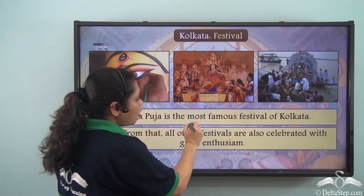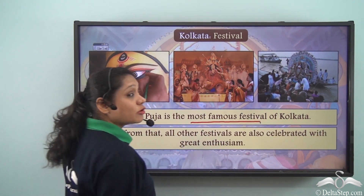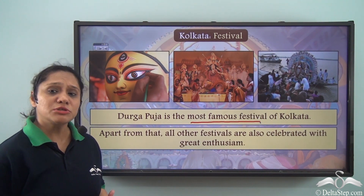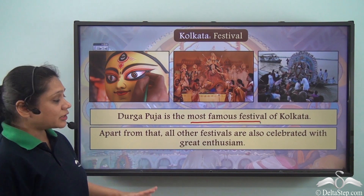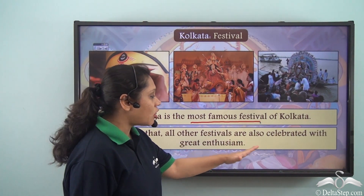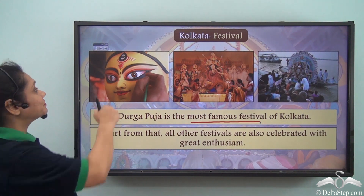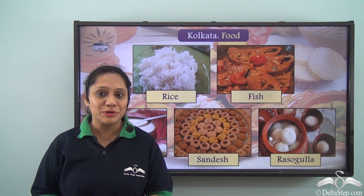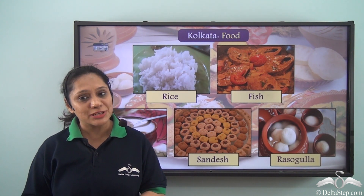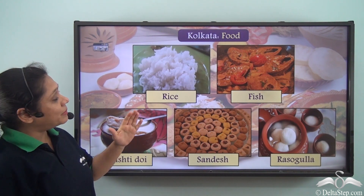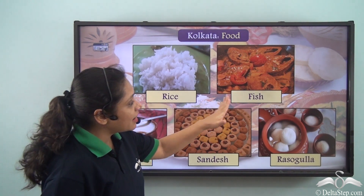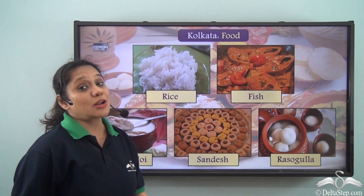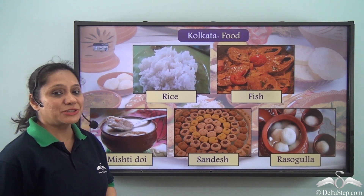Durga Puja is the most famous festival of Kolkata; the entire city is beautifully decorated at this time. All other festivals are also celebrated with great enthusiasm. Kolkatans love to eat, and you will find lip-smacking food in the city. People here typically eat rice, fish, mishti doi, sandesh, and the famous rosogolla. Kolkatans are famously known for their sweet tooth.